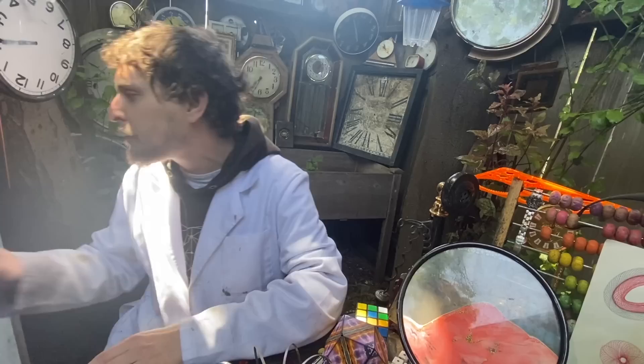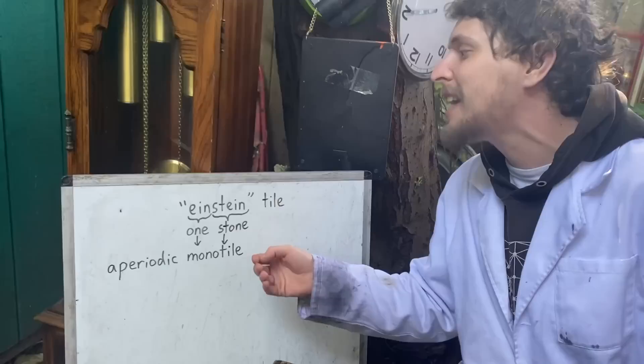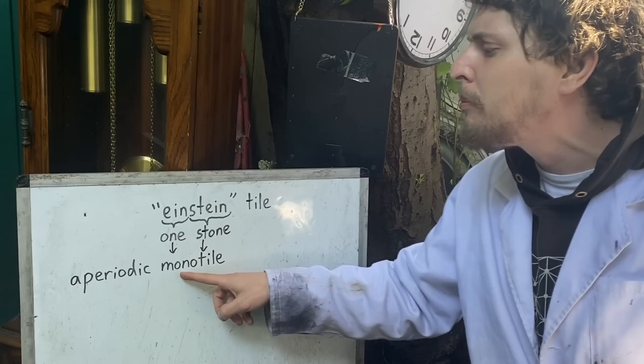In fact, I was already planning on making an episode about a discovery that was published a few months ago about a shape often called the Einstein tile, although that's not named after the human Einstein. The word root there is 'one stone,' which is basically referring to the monotile part of its more technical name — that this shape was something called an aperiodic monotile that was discovered.